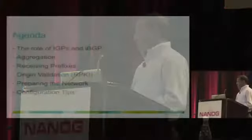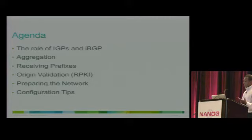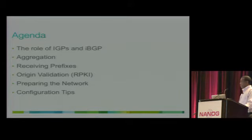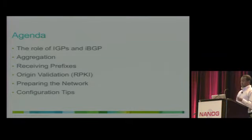Getting back to the main session. We'll discuss the role of IGPs and IBGP — when to use each one. The importance of aggregation, receiving prefixes from different entities, using origin validation to make sure that a route received from a specific origin is really an authenticated origin, and why that's important. And preparing the network and configuration tips.